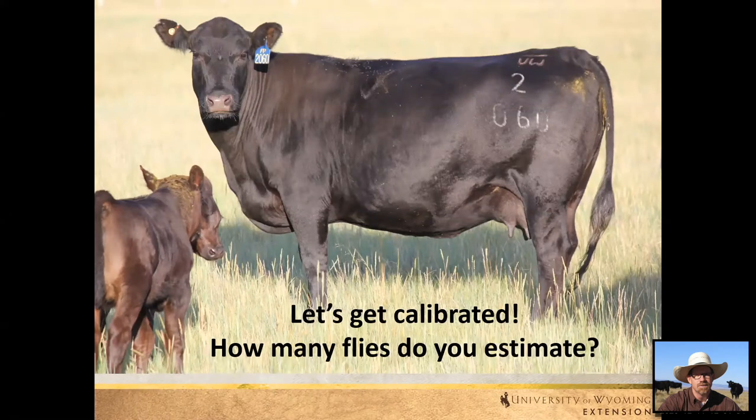Let's get calibrated. How many flies do you estimate on this cow near Laramie? You can see all these little dots — head down, wings up. This cow has about 50 in the picture, so we figure she probably has around 100 total. She's below the threshold for treatment.